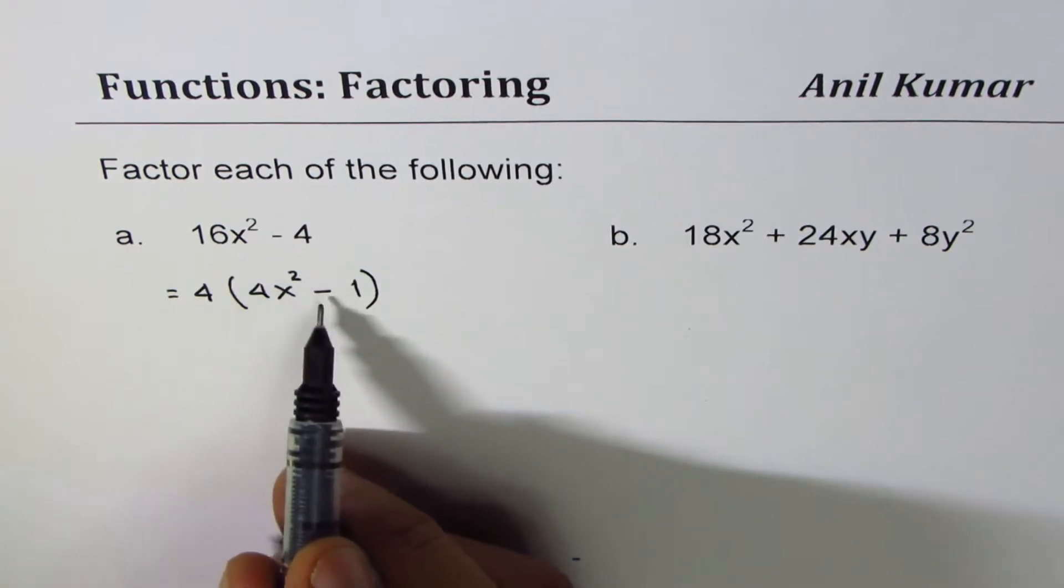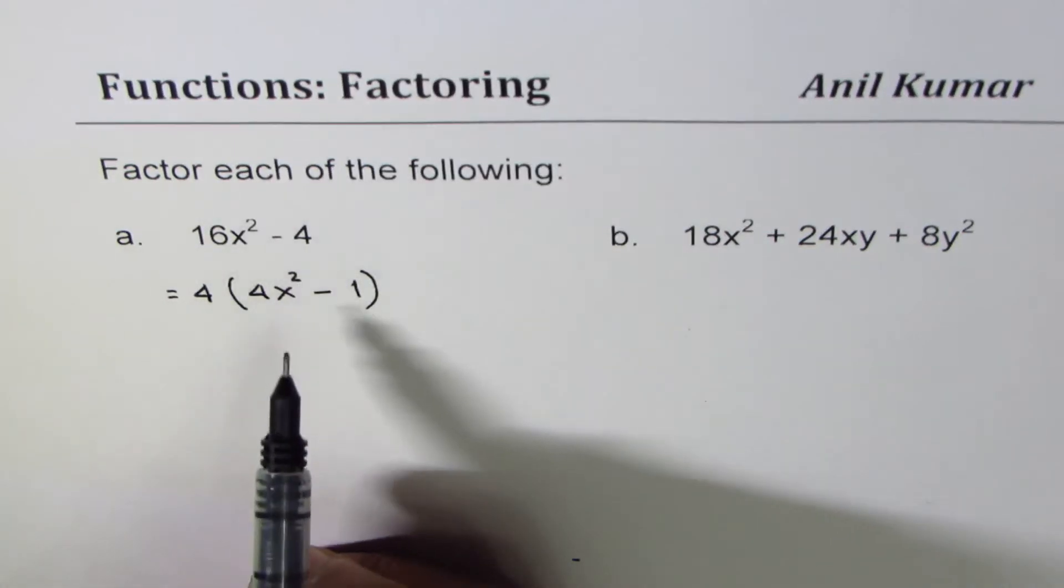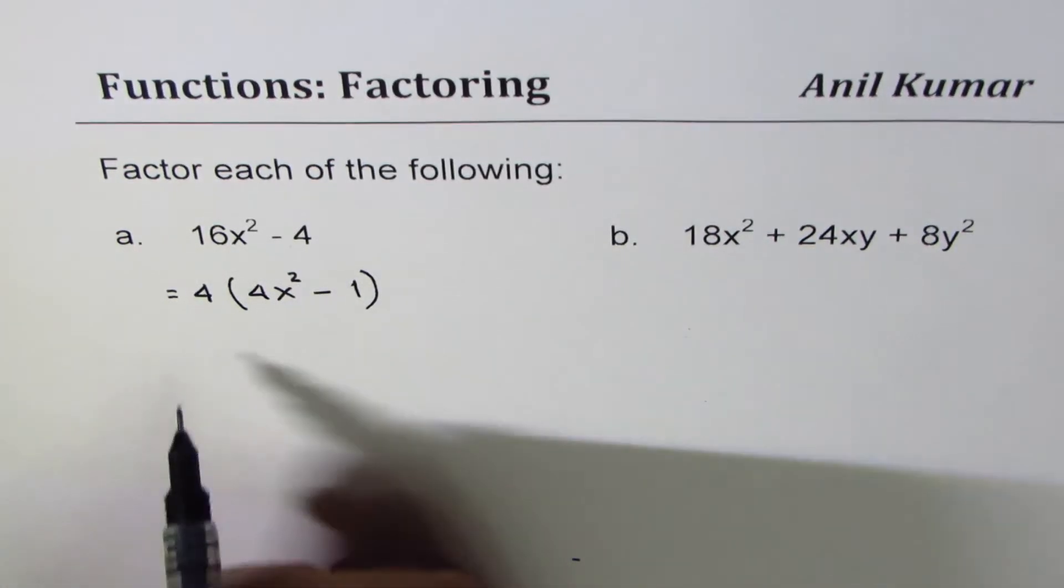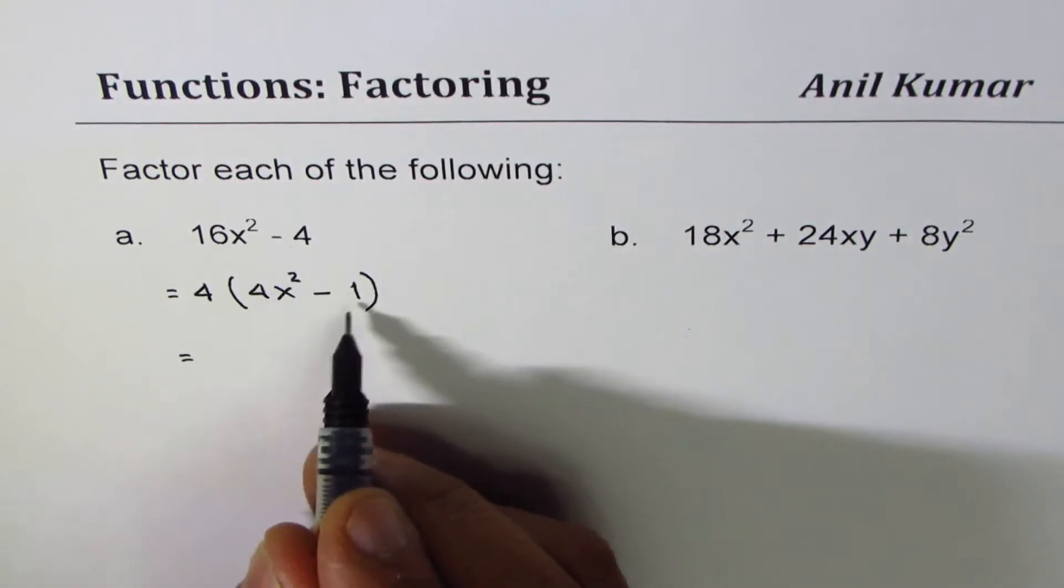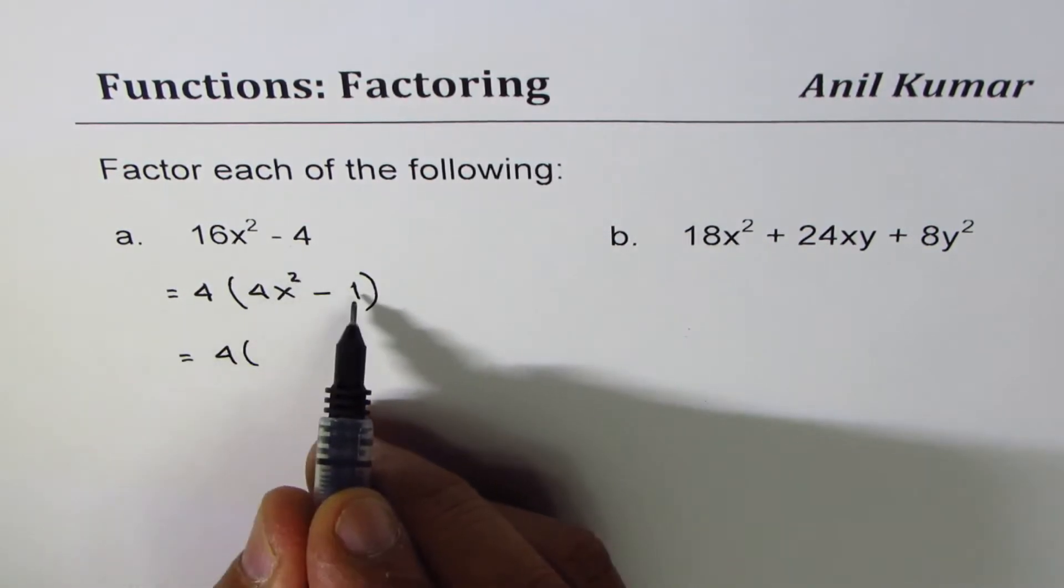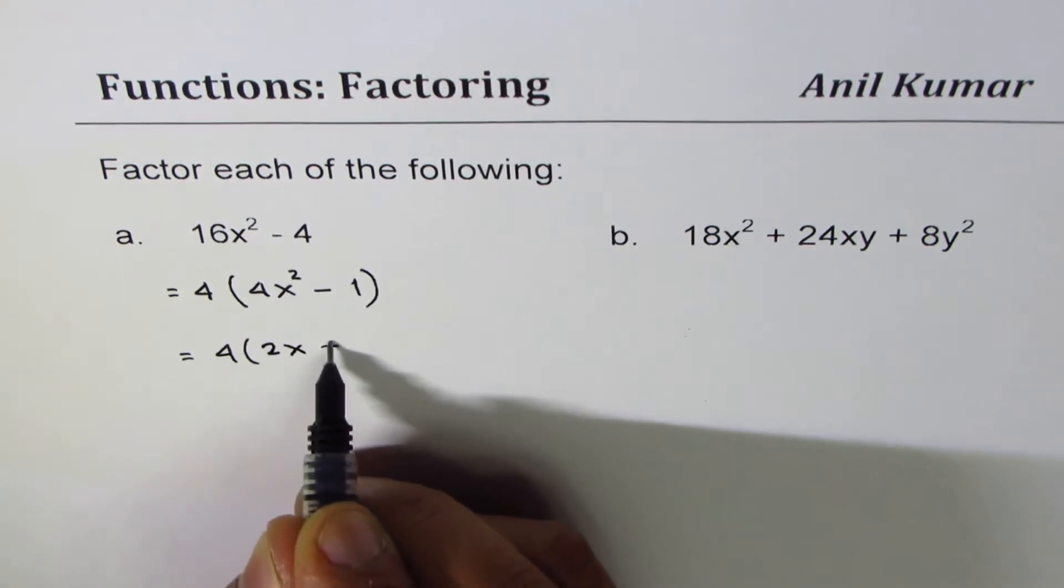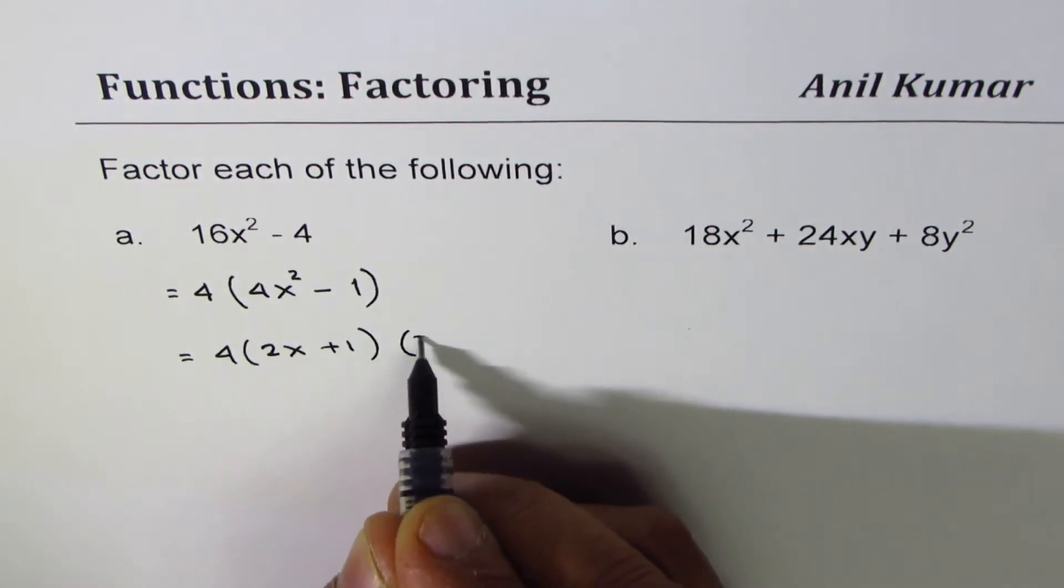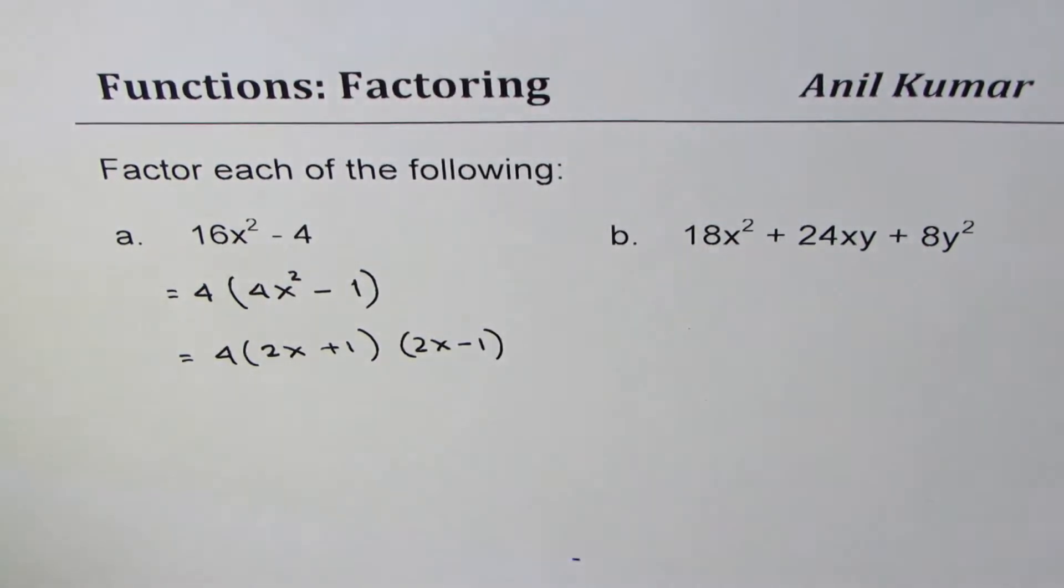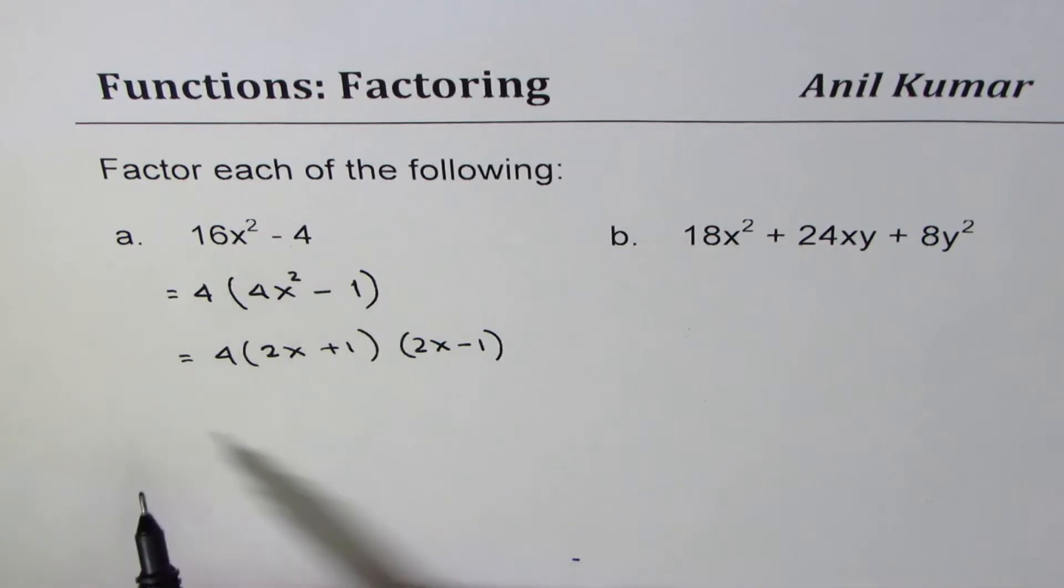Now 4x² - 1 can be further factored. So whenever you have questions on factoring, you have to completely factor. 4x² - 1 can be factored as this is (2x)² minus (1)². So it can be factored as (2x + 1)(2x - 1). Now that is important to understand. So that is how you are going to factor a.